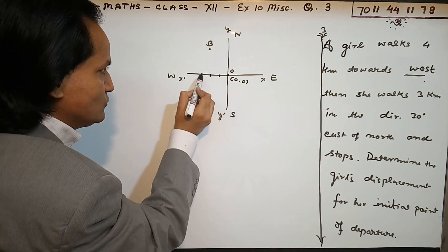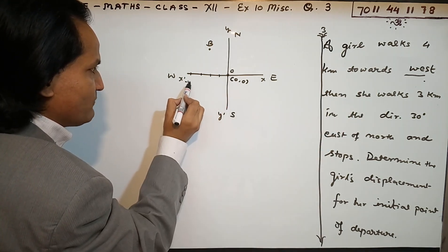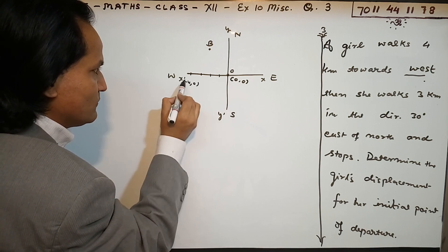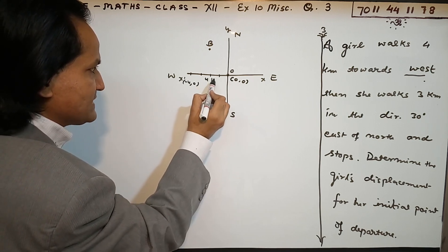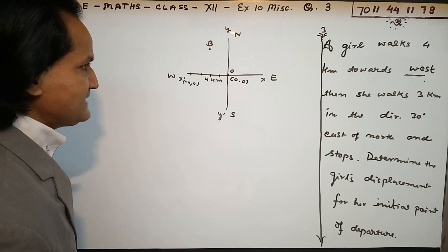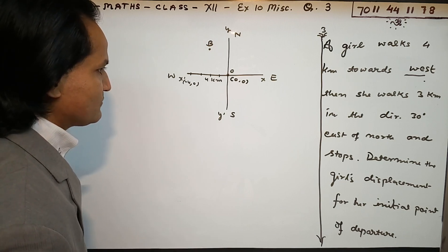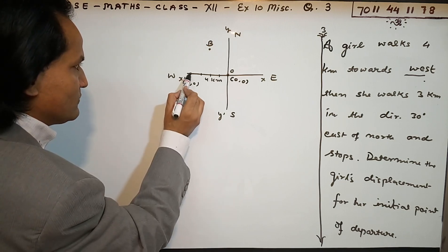Now come to the point: 4 kilometers to the west - 1, 2, 3, 4. Here is the point (-4, 0). 4 kilometers, this is the distance.